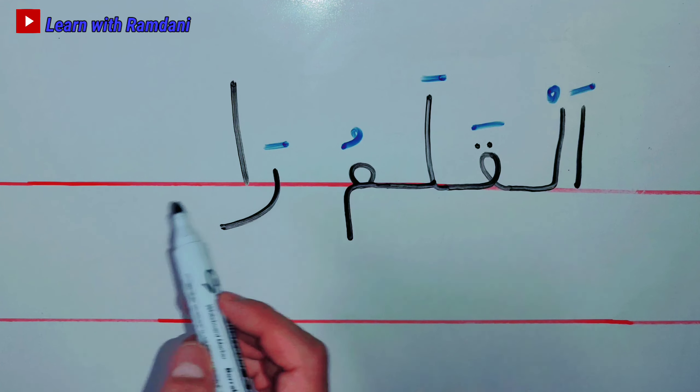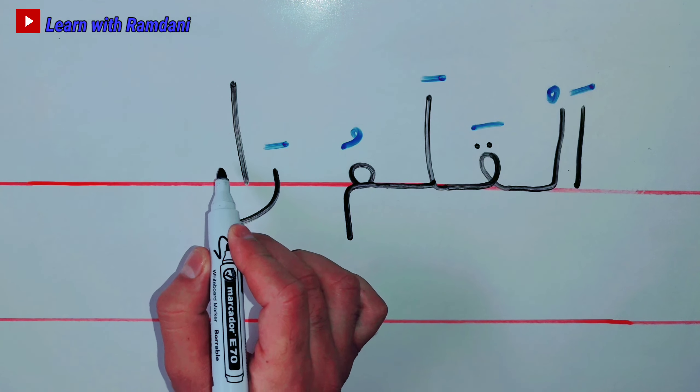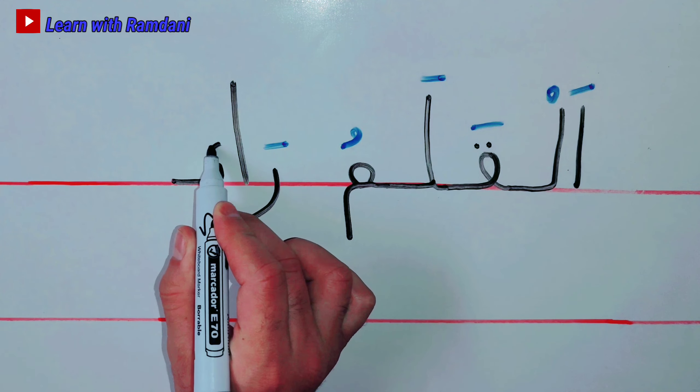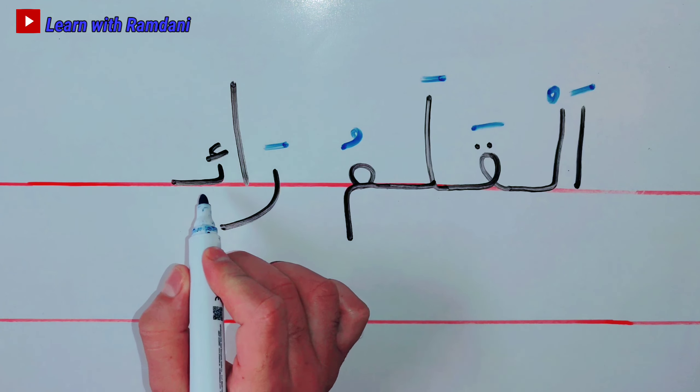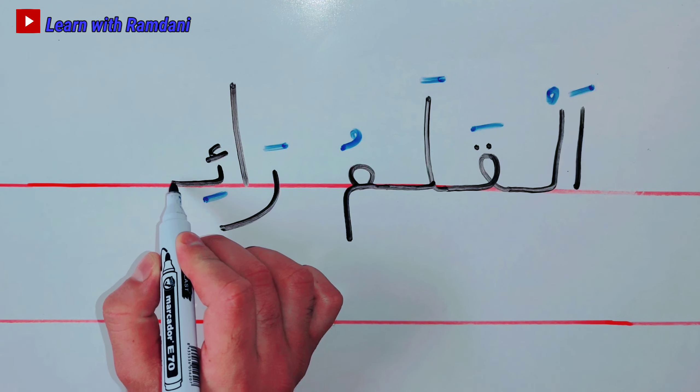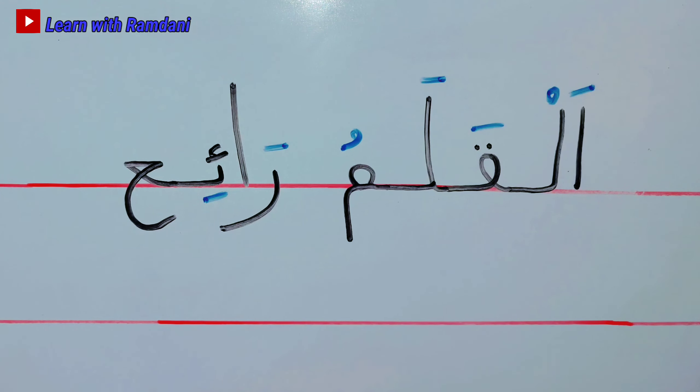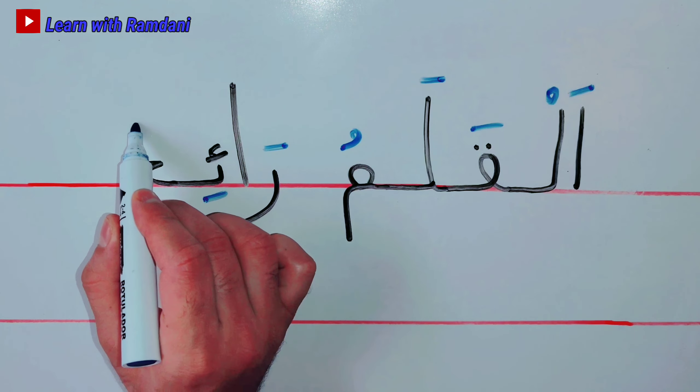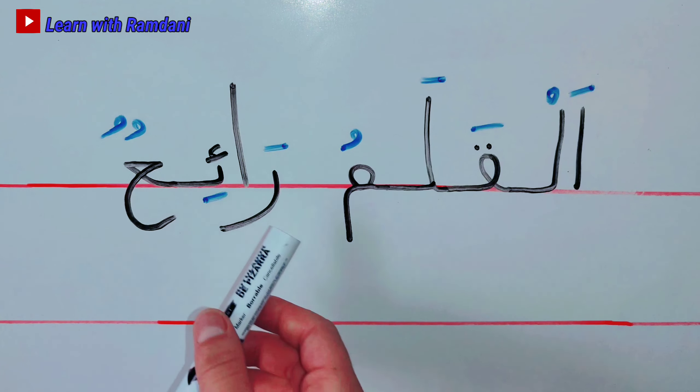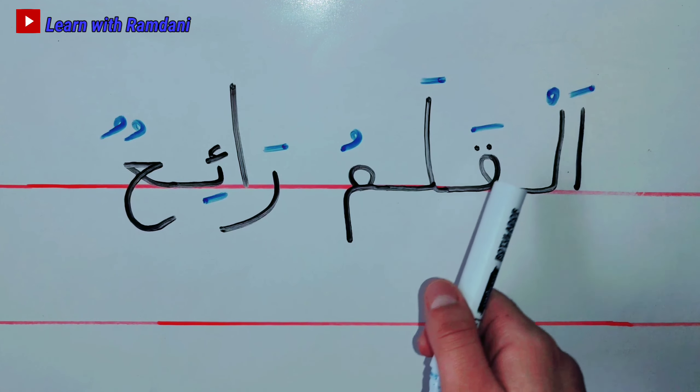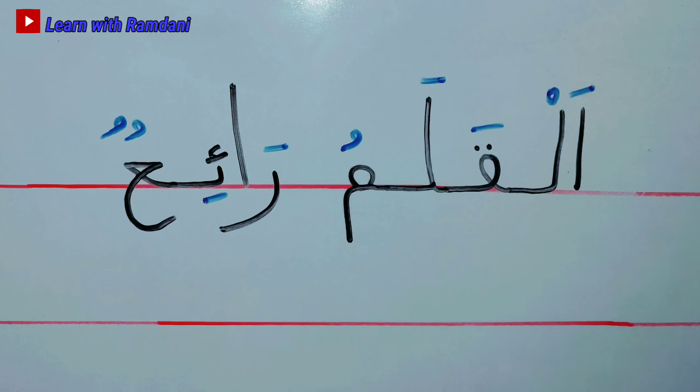And we put Al-Hamza here, Kasra: I, Ra, Ra. And then the letter Ayn. The letter Ayn, we put Dhammatain: On, Ra, Ayn, Ra Ayn. Al-Qalamu Rai'un, Al-Qalamu Rai'un.